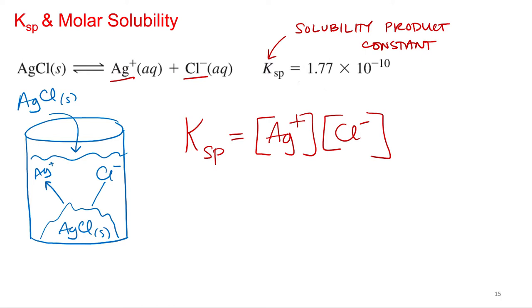And it turns out that the Ksp for this compound is 1.77 times 10 to the negative 10th. Is that a big number or a small number? Small. That's a small number. So silver chloride has very limited solubility.